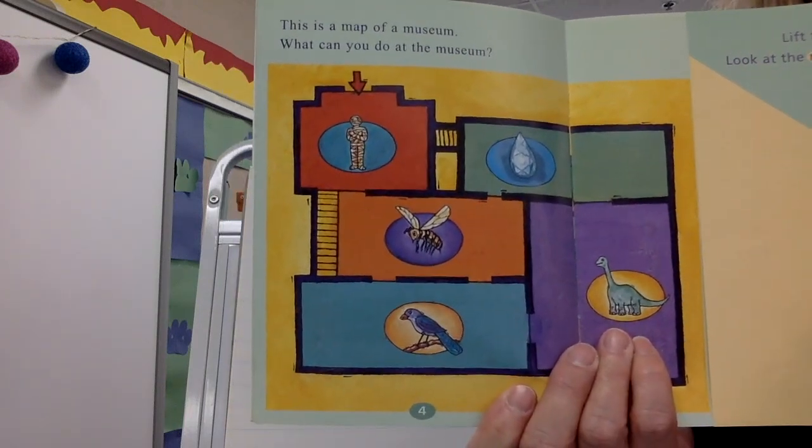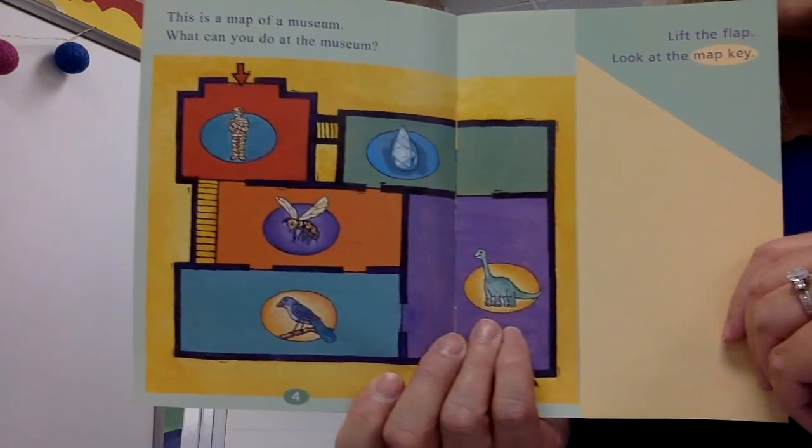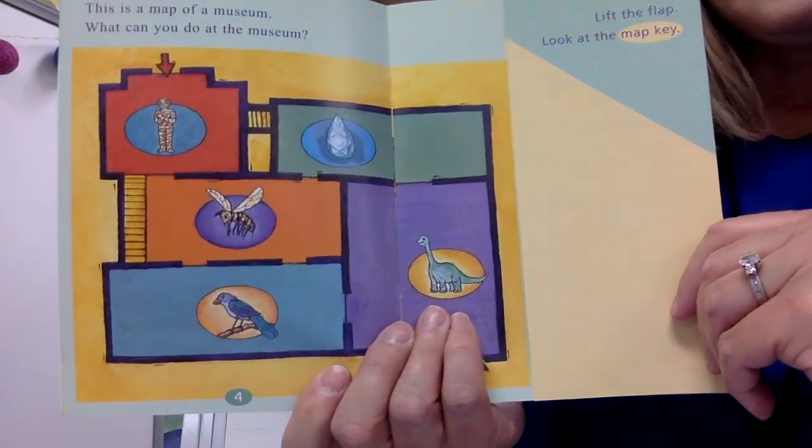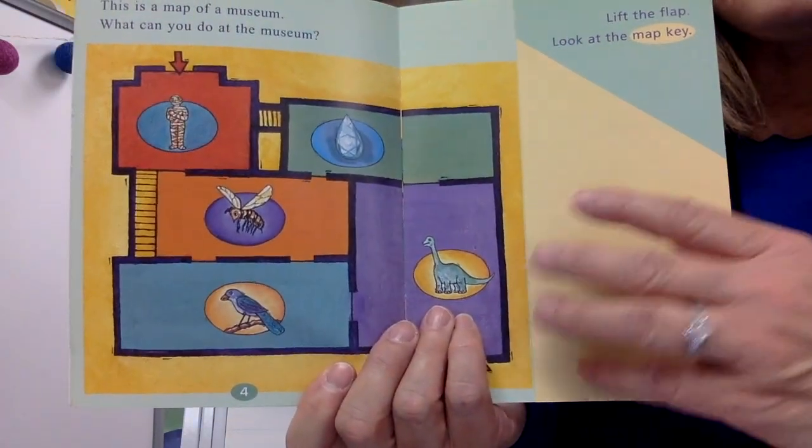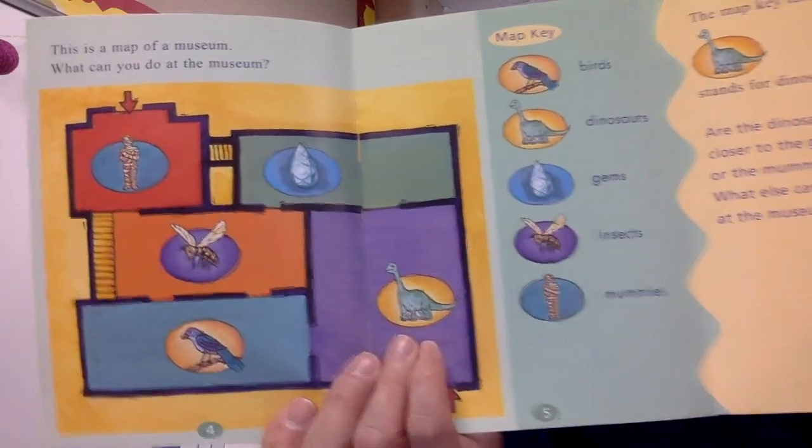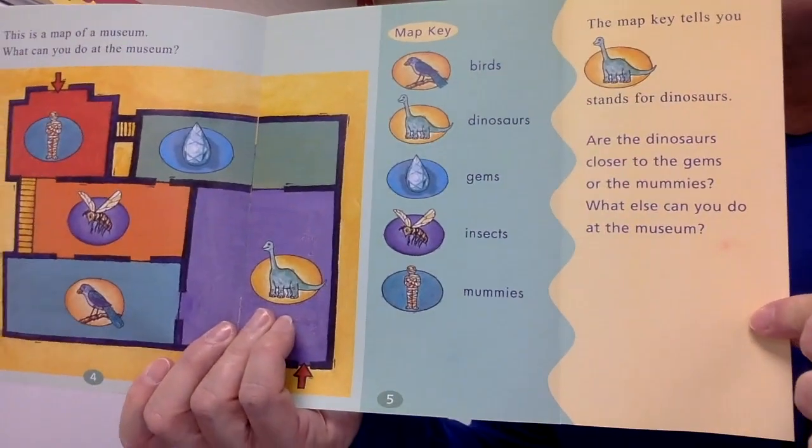This is a map of a museum. What can you do at the museum? Do you see all the different things? So you can make a guess by the pictures, can't you? But look what they have here. A map key.